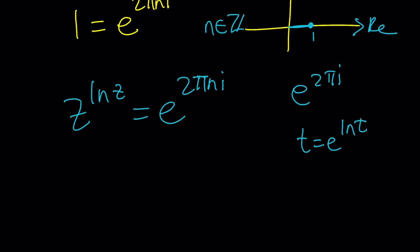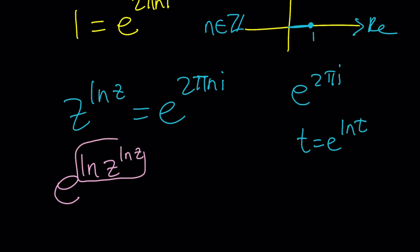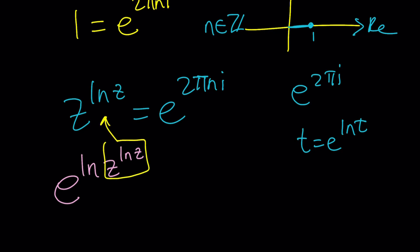We're going to go ahead and write z to the power ln z as e to the power ln z times ln z. So this is equal to e to the power 2πni. Now I have the e's, so let's go ahead and set the exponents equal to each other. You might be questioning whether we're considering all the branches by just setting the exponents equal — yes, because we're using an integer n, so this should consider all the solutions.